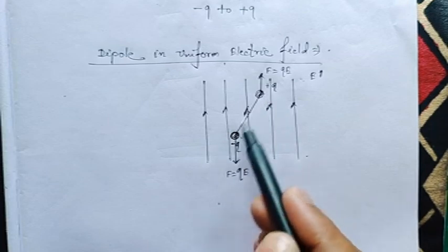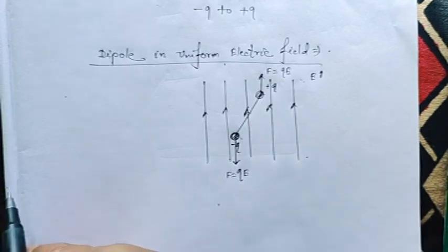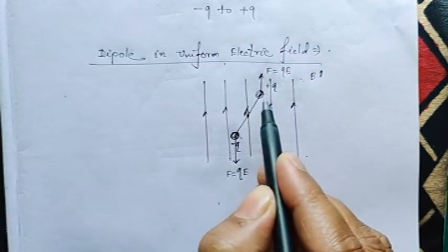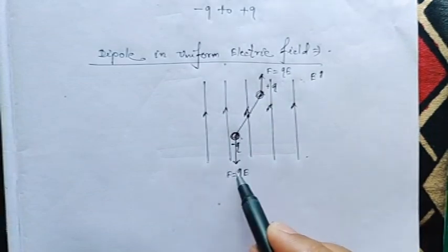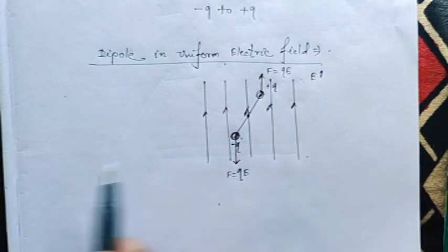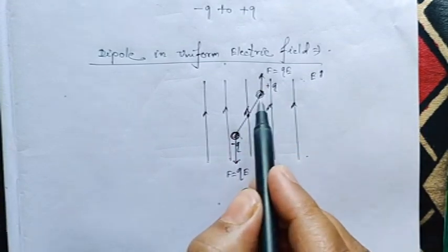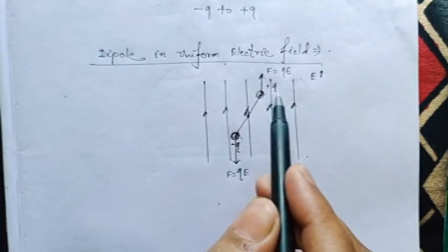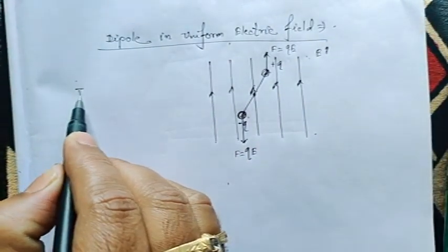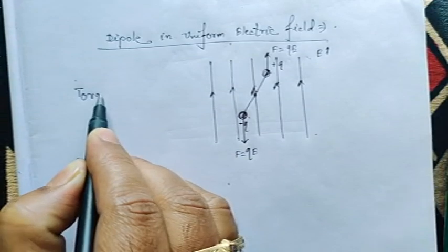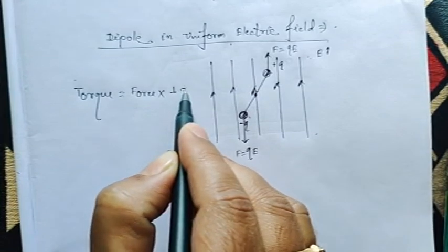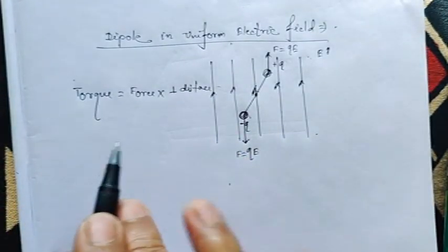For these two charges, whatever forces are experienced — QE along one direction and QE along the other — the net force for the system will be zero because these two equal forces act on the same object in opposite directions. Therefore, there will be no translatory motion. But there will be a rotational motion because two equal forces act at the two ends of the same object in opposite directions, and this rotational motion gives us some amount of torque. From Class 11, we know torque equals force into perpendicular distance between the two forces.